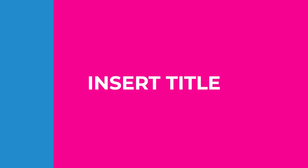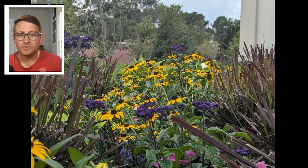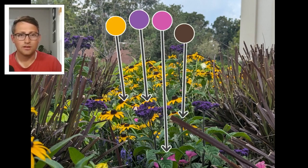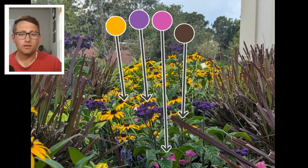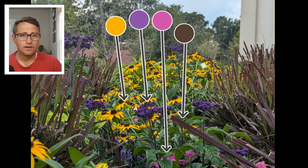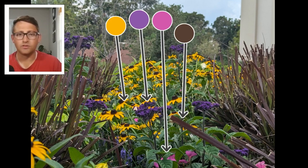Here are some garden examples I've visited to illustrate these color schemes. In this first image, there are two main colors: the yellow from black-eyed susans and the purple from annual heliotropes, with a little bit of pink from some petunias and a muddy greenish-purple from the grasses. This is mainly a complementary color scheme with yellow and purple as the main contrast. Yellow and purple are often used together because those are pretty easy colors to find at the garden center.